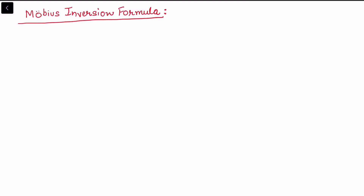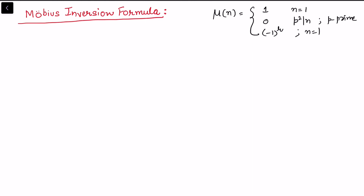In this video I will be explaining the Möbius inversion formula. First, let us define the Möbius function μ(n): it is 1 if n equals 1; it is 0 if there is a prime square that divides n for some prime; and it is (−1)^r if n has the prime factorization p1 up to pr where all the primes are distinct.